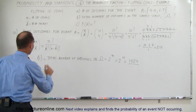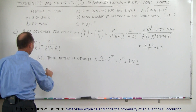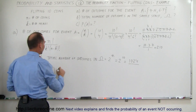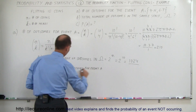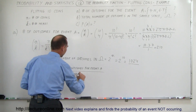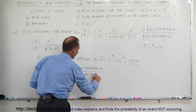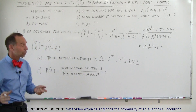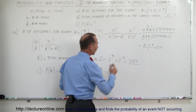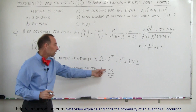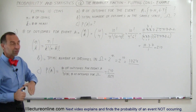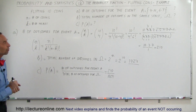Now we have both values, so finally for C, the probability of event A is equal to the total number of outcomes for event A divided by the total number of outcomes for the sample space. In this case, the numbers we have are 210 divided by 1024. You can simplify that, but it's about 1 in 5 — so there's about a 1 in 5 chance when you flip a coin 10 times that you'll get 4 heads and 6 tails.